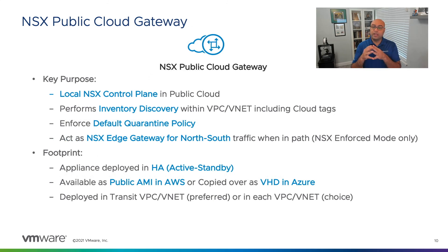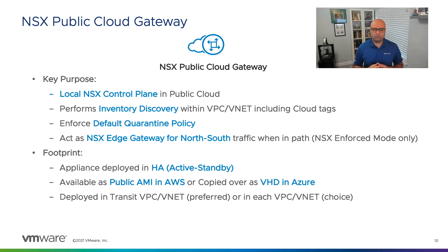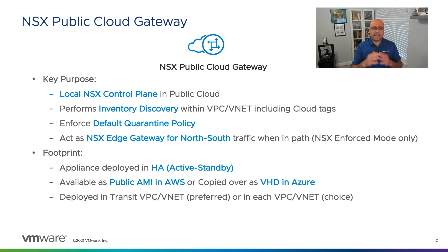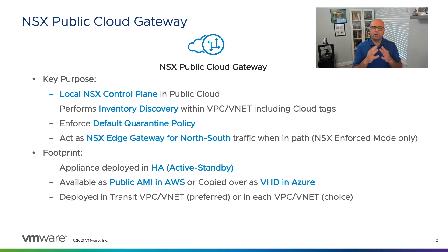Public cloud gateways are the local NSX control plane in the public cloud. They get deployed within a VPC or VNet and the deployment process is completely automated — you just provide information like which VPC to deploy into, click the button, and NSX Cloud handles everything. In module 3 we will go through this process. The gateway enforces the quarantine policy and DFW policies — either to native cloud security groups or directly in the agent depending on enforcement mode.